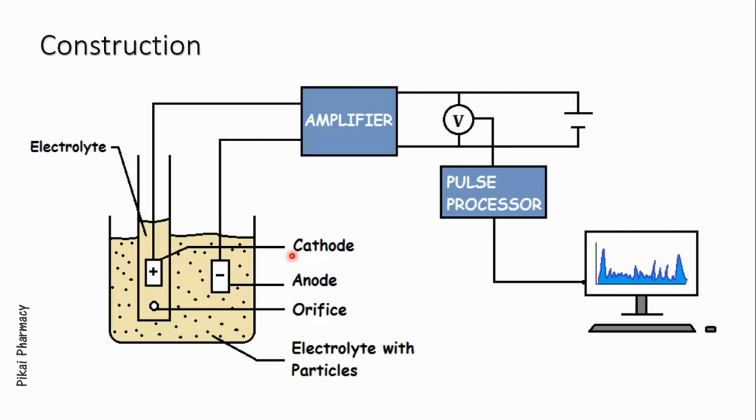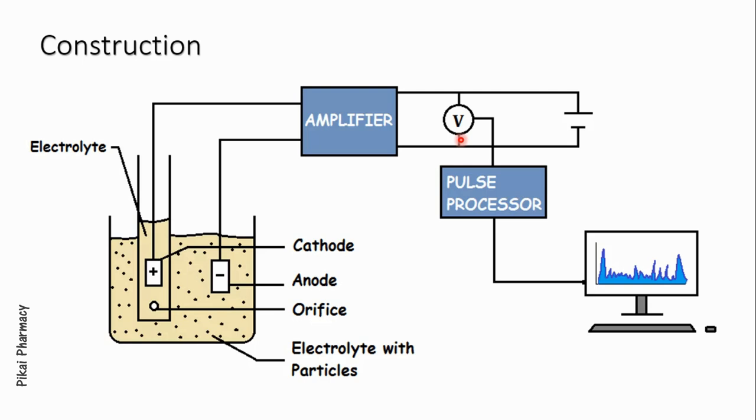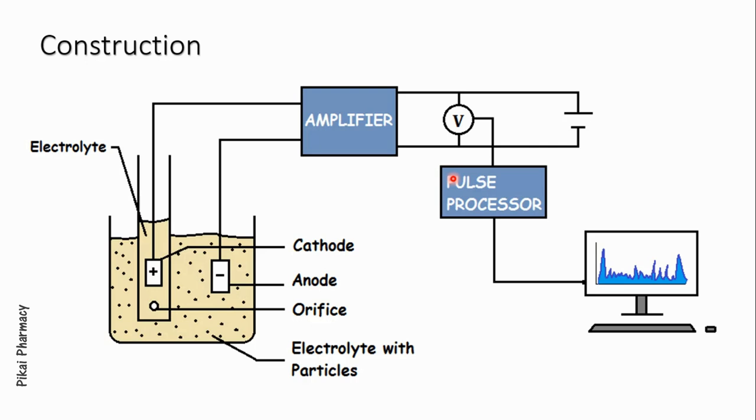The electrolytic solution inside the glass tube contains the cathode electrode and the outer electrolytic solution contains the anode electrode. This whole thing looks like a setup of an electrolytic cell, and yes it is, but there are some additions: there is an amplifier and a voltmeter attached to the circuit which is further connected to pulse processing units. Now let's discuss the principle of the Coulter counter.